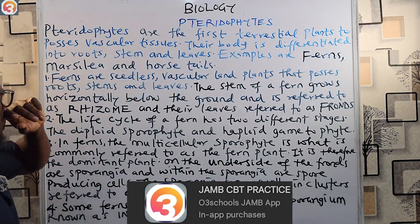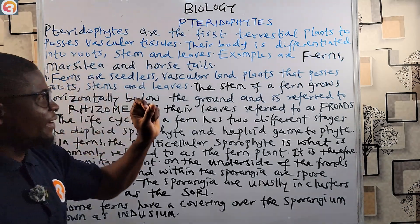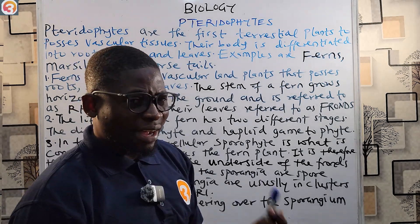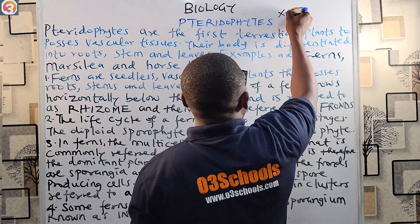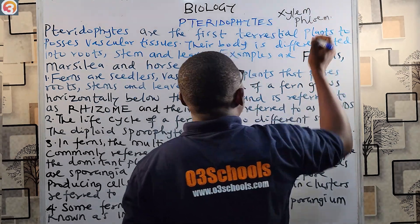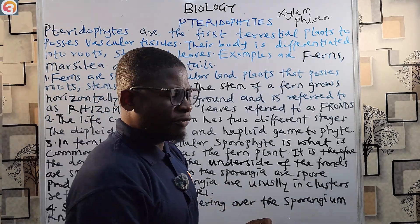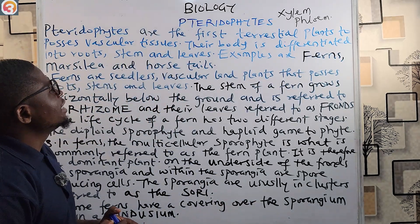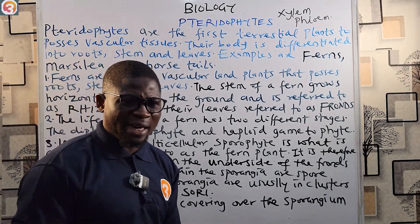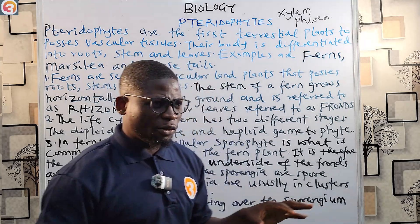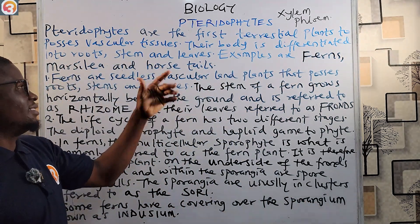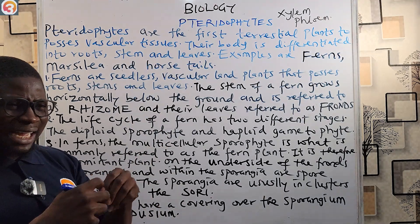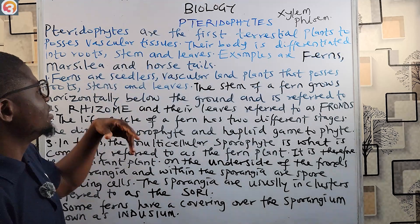Pteridophytes are the first terrestrial plants to possess vascular tissues - the xylem and the phloem - for water conduction and for conducting manufactured food. They are specialized tissues for the transport of minerals and water. Their body is differentiated - unlike the thallophytes - into distinct parts: the roots, the stems, and the leaves.